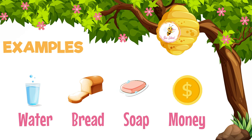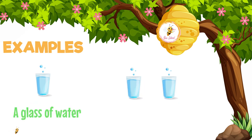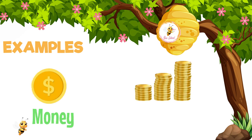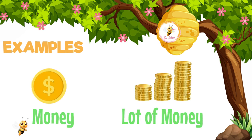But they could be used in a certain form. For example, a glass of water, five pieces of soap, lots of money. These are a few examples of how we could use uncountable nouns.